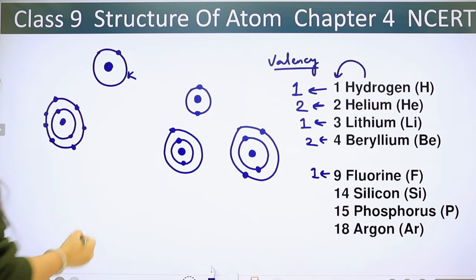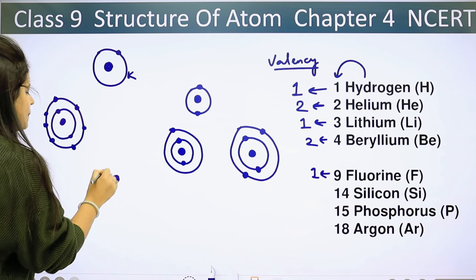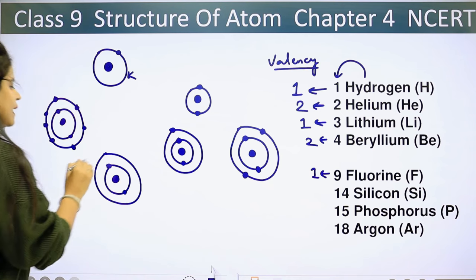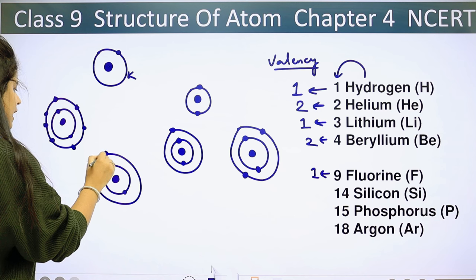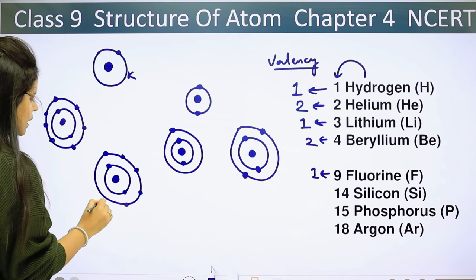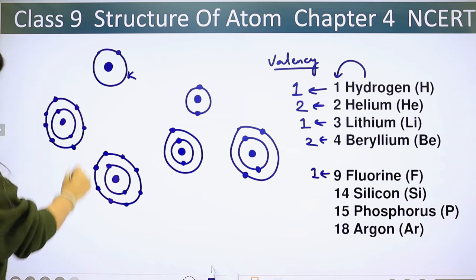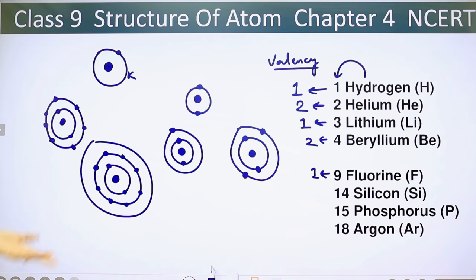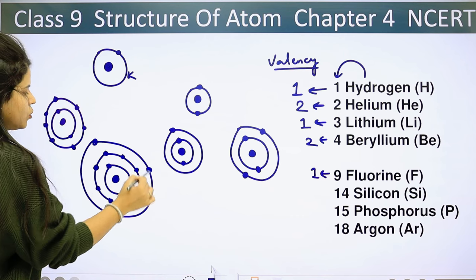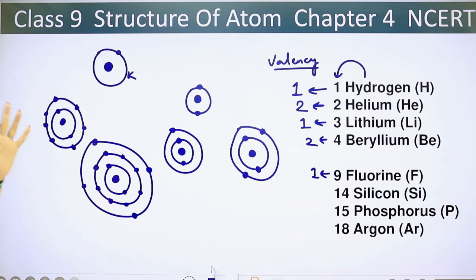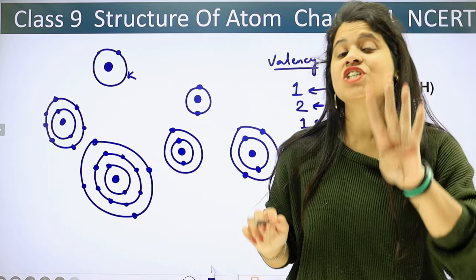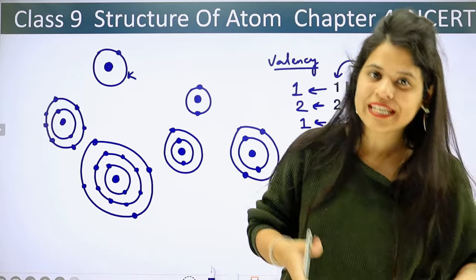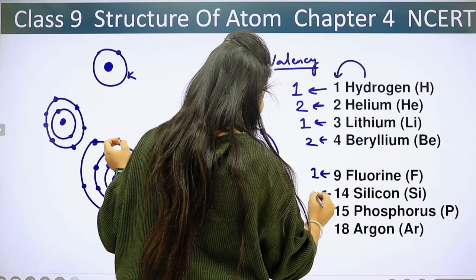Silicon has atomic number 14. This is the nucleus. In the first shell (K-shell), we put 2 electrons. In the second shell (L-shell), we can put 8 electrons: 1, 2, 3, 4, 5, 6, 7, 8. That's 10 electrons placed. Now in the third shell, we have 4 remaining electrons to place: 1, 2, 3, 4. Here there are 4 electrons in the outermost shell, so whether silicon loses 4 or gains 4 to complete 8, in both cases the valence is 4.